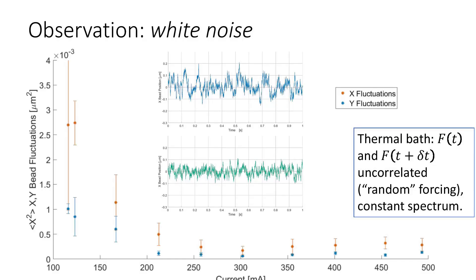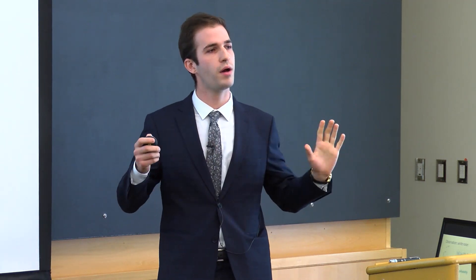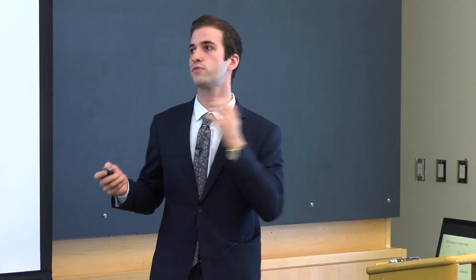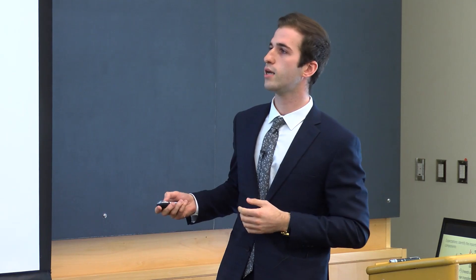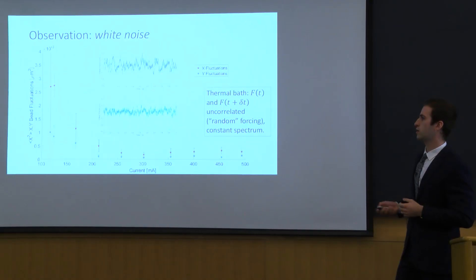This is the first observation that we did and actually Einstein did this observation a long time ago. He observed the white noise. Essentially the collisions they generate uncorrelated forcing and we can think of it as something that is not biased with any distribution is just uniform. As you can see on these slides we have the position plotted in terms of time and it exhibits a uniform distribution of the spectrum.